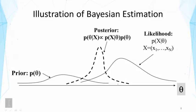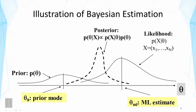We can look at some interesting point estimates of theta. One point represents the mode of the prior — the most likely parameter value according to our prior before observing any data. Another point is the maximum likelihood estimate, representing the theta that gives the data maximum probability. The posterior mode is the most likely theta value given the posterior distribution, and it represents a good compromise between the prior mode and the maximum likelihood estimate.